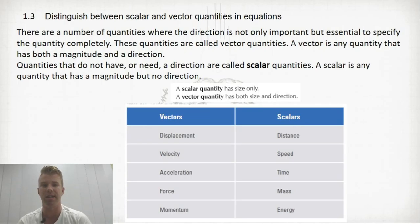There are a number of quantities where the direction is not only important but essential to specify the quantity completely. These quantities are called vector quantities. A vector is any quantity that has a magnitude and a direction,